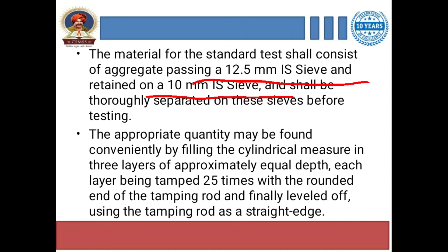After filling the first one-third of the cylinder, tamp it 25 times with the tamping rod. Then pour the second one-third of aggregate and tamp again 25 times. Finally, pour the last portion to fill it, and tamp again. The aggregate from this measuring cylinder is then transferred into the cylindrical testing mold for the crushing value test.